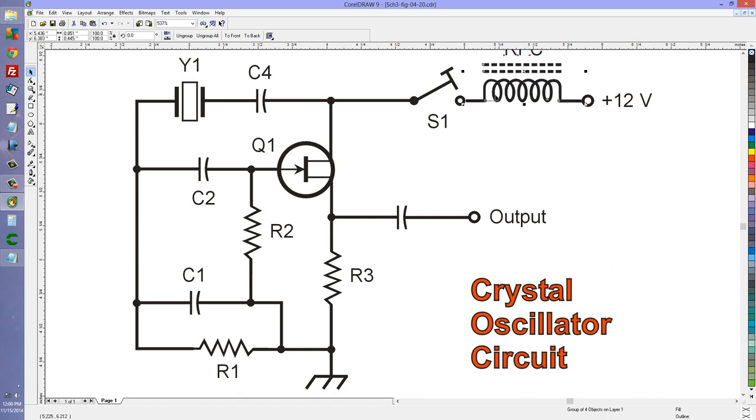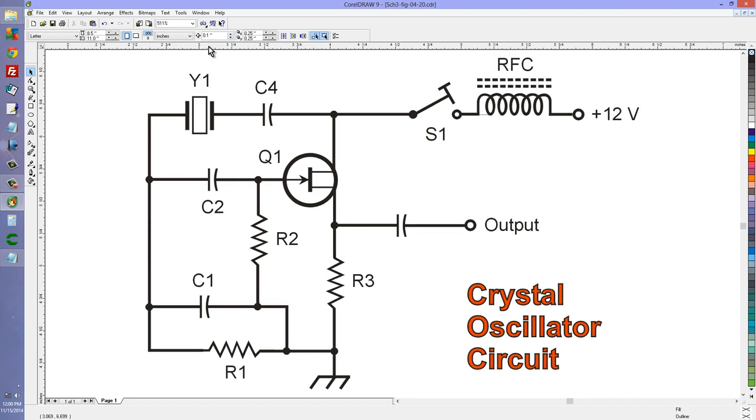With that dead short there the way that it was, the problem was - I've got to resize this now to make it fit again. With a dead short there like that, when you close this key, the feedback loop is going to be grounded at one end, the drain is going to be grounded and that is going to keep this circuit from oscillating. It will short the feedback loop to ground.